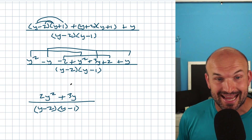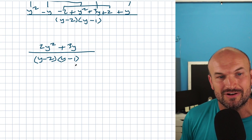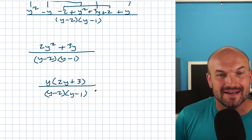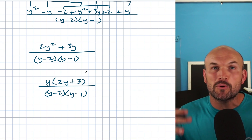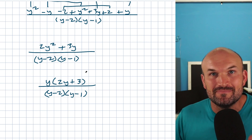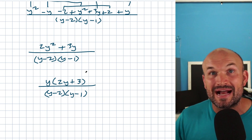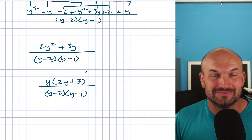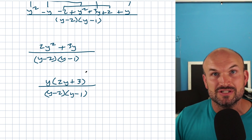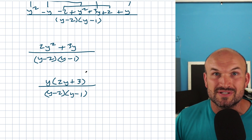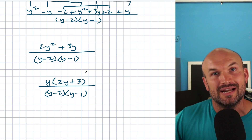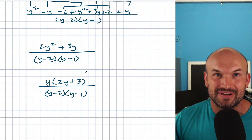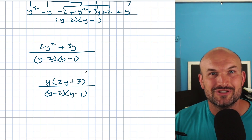We could factor out a y from the numerator, giving y(2y + 3) over (y - 2)(y - 1), but unfortunately nothing cancels out. Hopefully you now have a better understanding and more confidence in how to combine rational expressions by adding or subtracting. If you have a test coming up, I wish you the best of luck — let me know down below how you do. If you need more examples on rational expressions or want to look at notes and resources available in my courses, check out the playlist and resources I have for you down below, or take a look at the next video I've created for you.